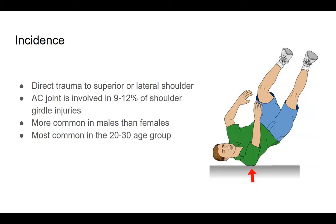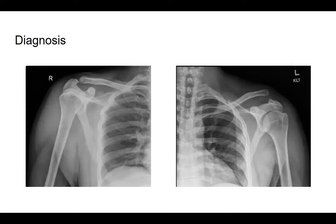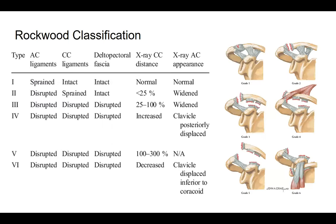AC joint injuries commonly occur from direct trauma to the superior or lateral shoulder. They are involved in about 9 to 12 percent of shoulder girdle injuries, are more common in males, and most commonly occur in the 20s to 30s age group. Diagnosis is made by AP radiographs of both the injured and contralateral sides. Zanca views — AP radiographs with a 10 to 15 degree superior beam angle — better visualize the AC joint. Axillary views help visualize the direction of dislocation.